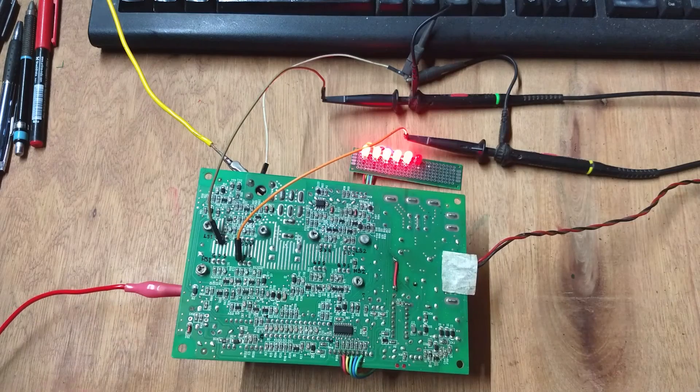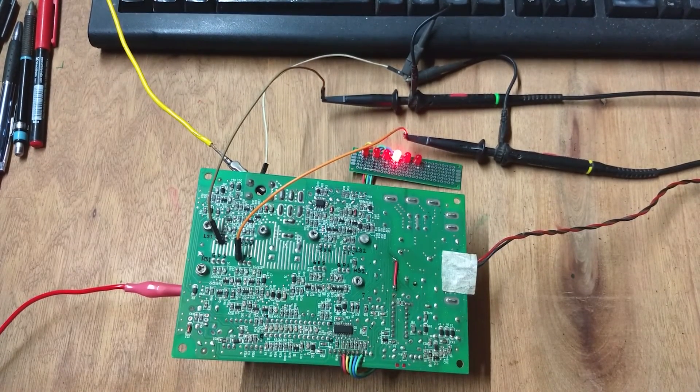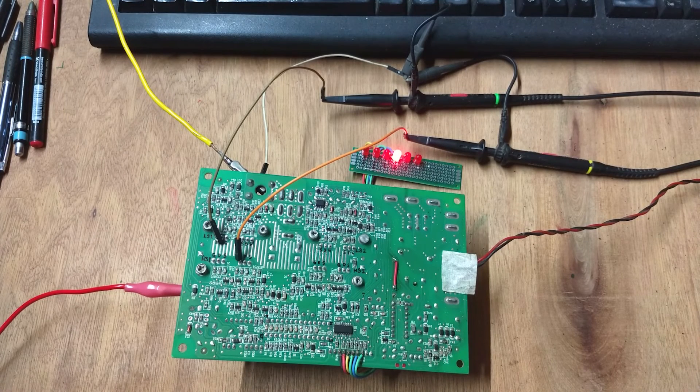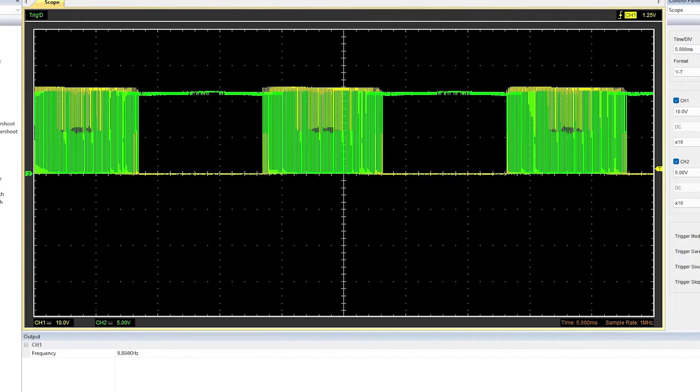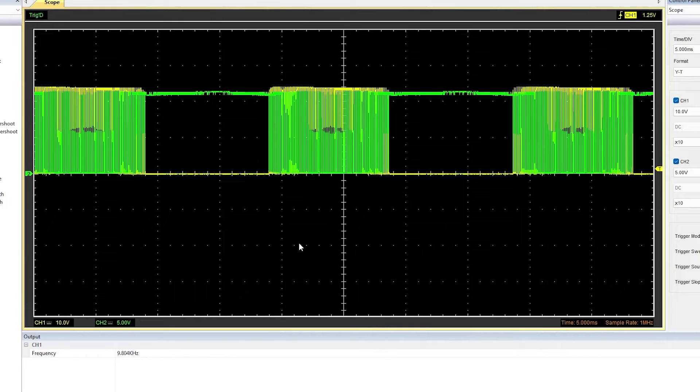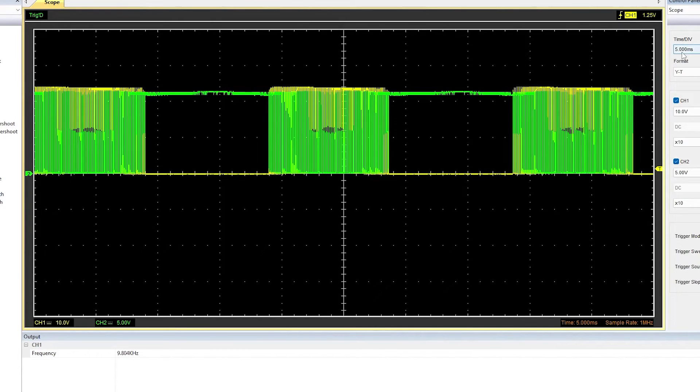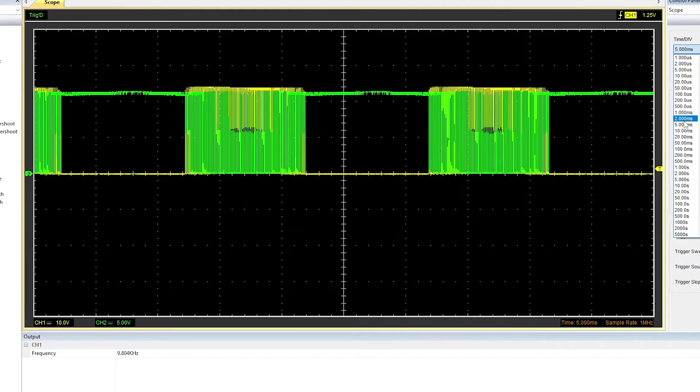Now I am connecting the inverter with a 12 volt battery. It has been turned on. I will test the gate pulses first. The yellow one is the high side and the green one is the low side gate pulses. It is an SPWM signal. The switching frequency is 9.8 kilohertz.